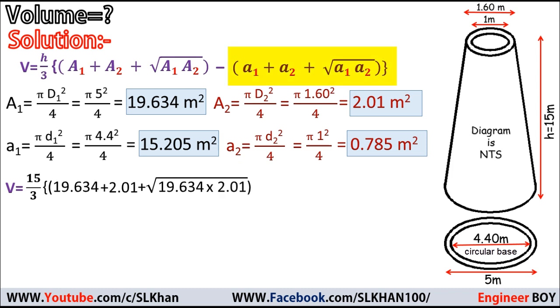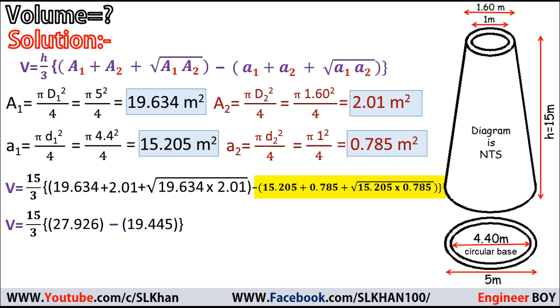Now putting the values for the inner frustum, I'll do this quickly. So V = (15/3) times [(27.926) - (19.445)].